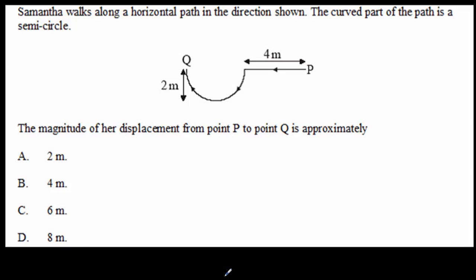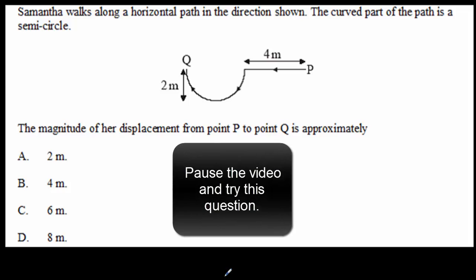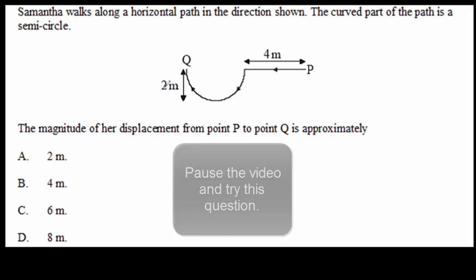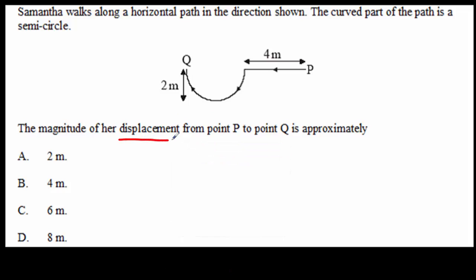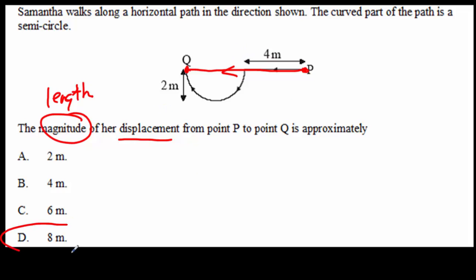Here are a couple of IB questions to test your knowledge. We're looking for the displacement from initial point P to final point Q, specifically the magnitude of the displacement — just the length, not the direction. The length will be 8 meters because our radius is 2 meters, so 4 plus 2 plus 2 makes 8 meters.